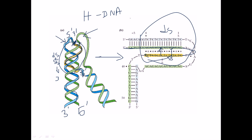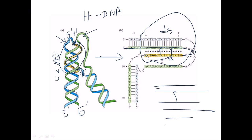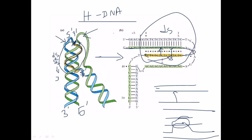This triple helix can be formed not only by the interaction of two separate DNA molecules, but also using the same DNA strand. By slightly bending of the DNA strand, we can form this kind of triple helix. This kind of DNA is called H-DNA, and it is formed because of intra-strand interactions.